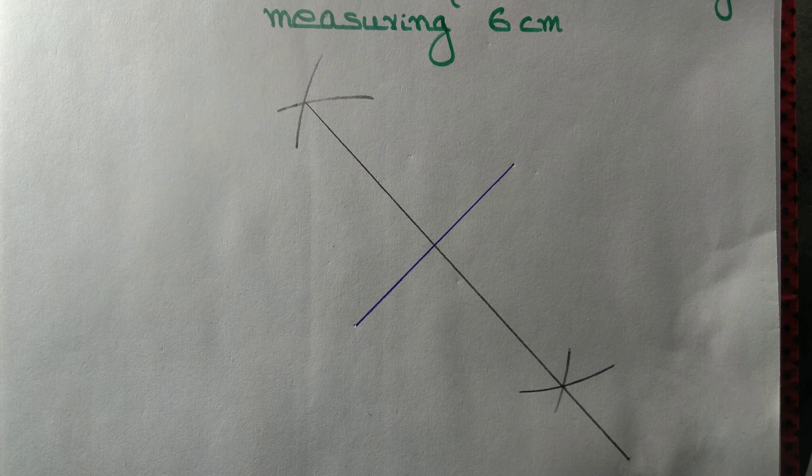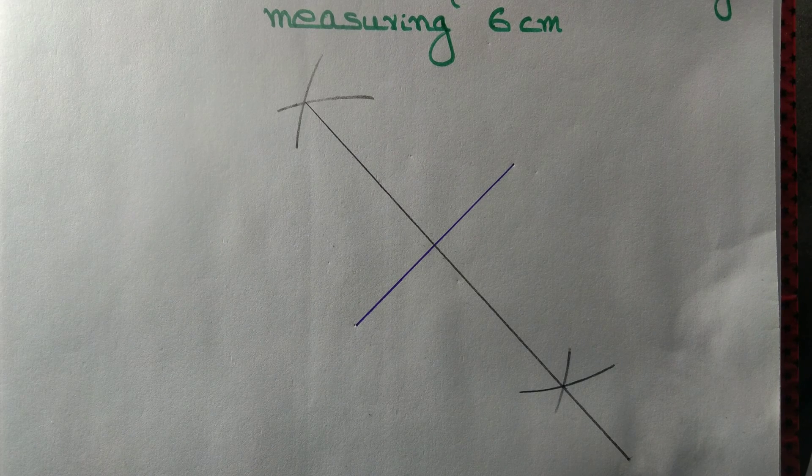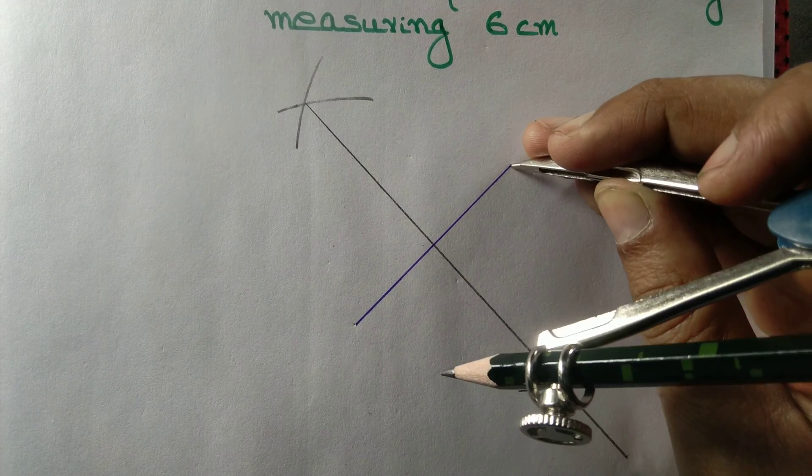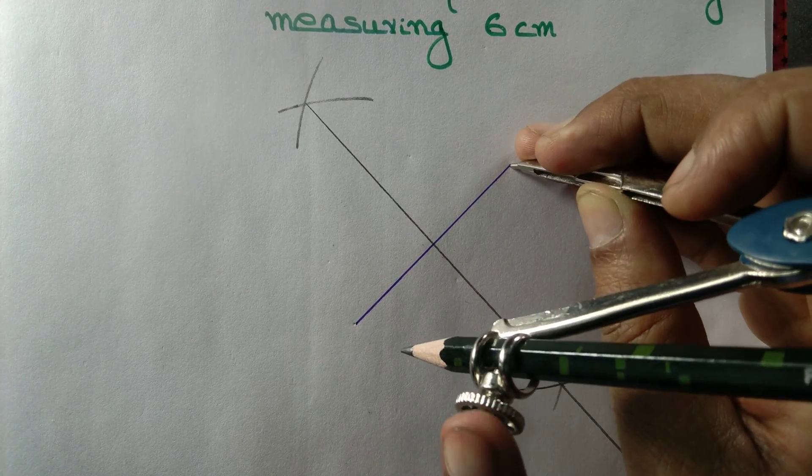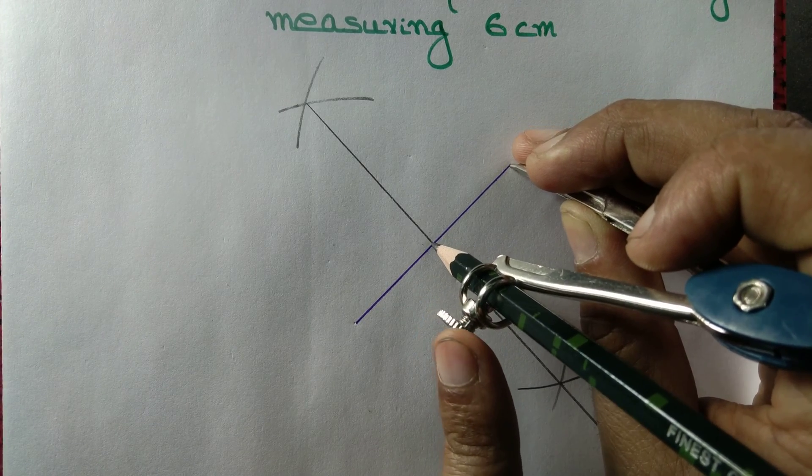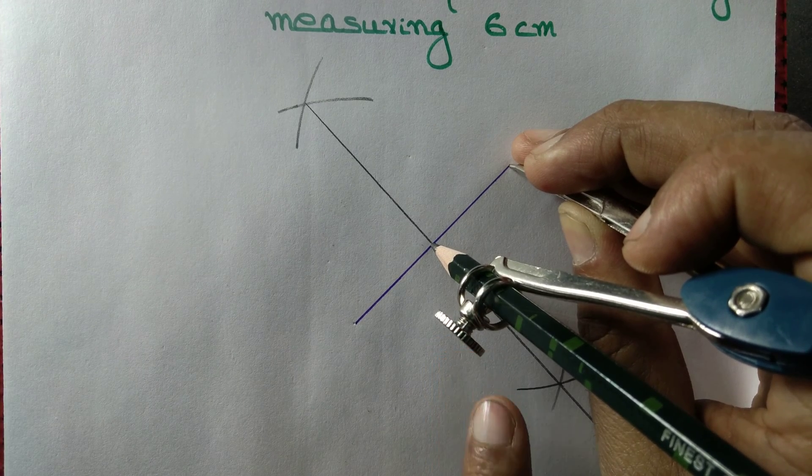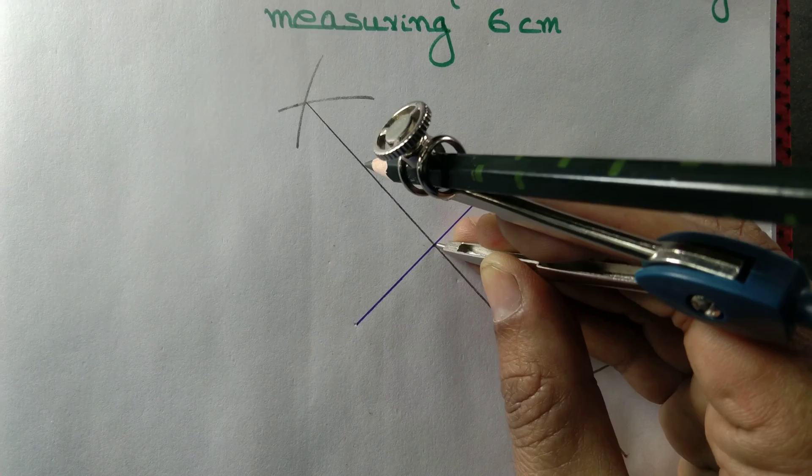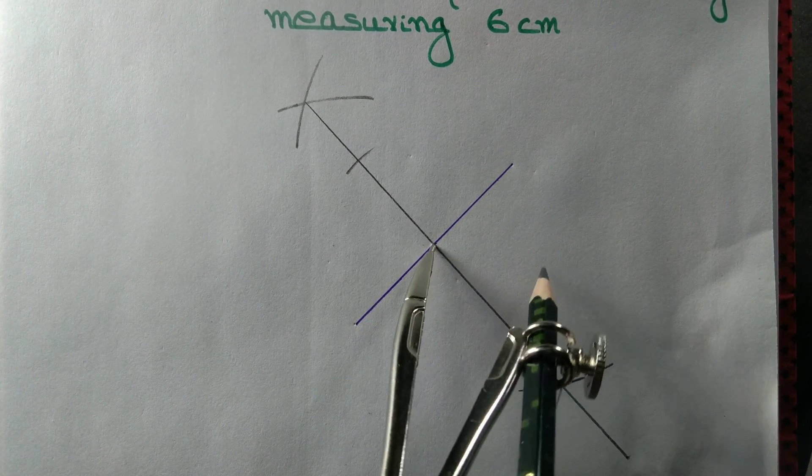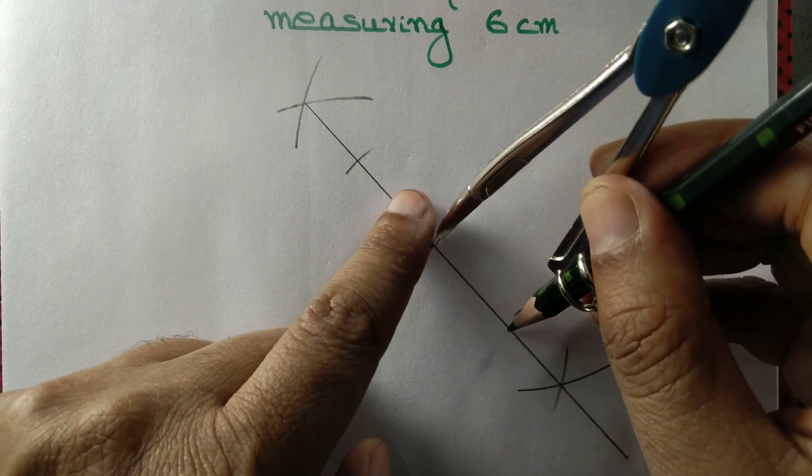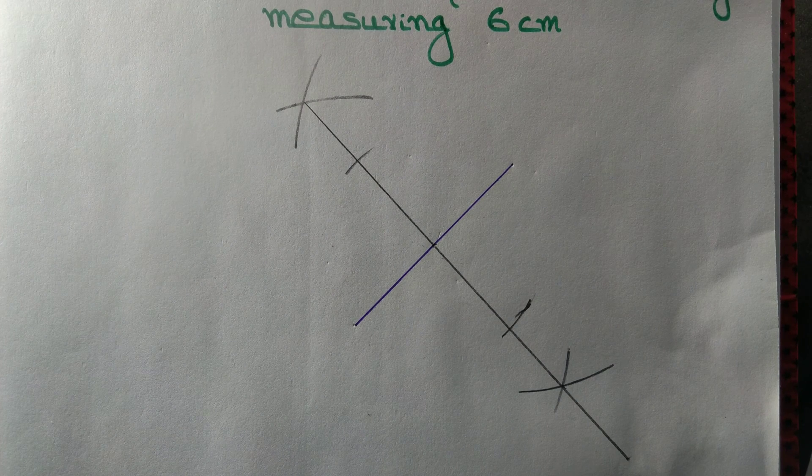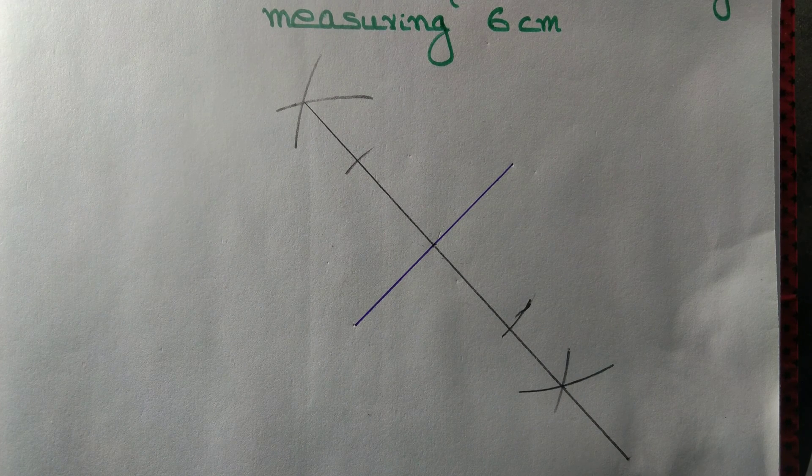So we have obtained a perpendicular bisector of the diagonal. We know that diagonals of a square are equal and this means the other diagonal must also be a perpendicular bisector. So we copy half the length of the diagonal and from the intersection point of the 2 diagonals, we cut an arc. We are making sure that the other diagonal also measures 6 cm.